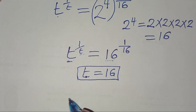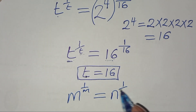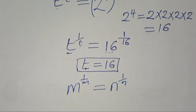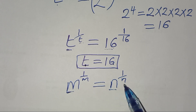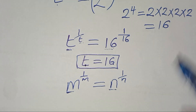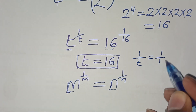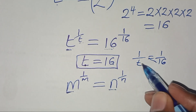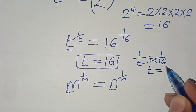This follows from the property that m to the power (1 over m) is equal to n to the power (1 over n) implies m is equal to n, and 1 over m is equal to 1 over n. Here, 1 over t equals 1 over 16, so cross multiplying confirms t is equal to 16.